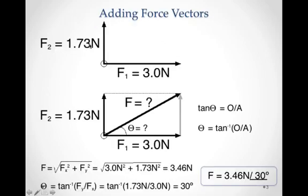To start with, let's take a simple example where we have two force vectors that are already in the horizontal and vertical directions. F1 is 3 Newtons and it is all in a positive horizontal, or X, direction. And then we have F2, which is in the vertical direction, or Y direction.